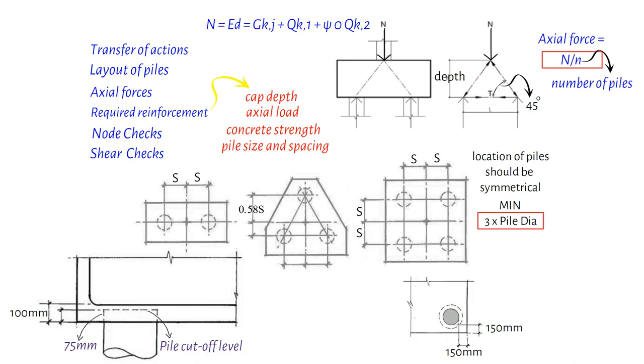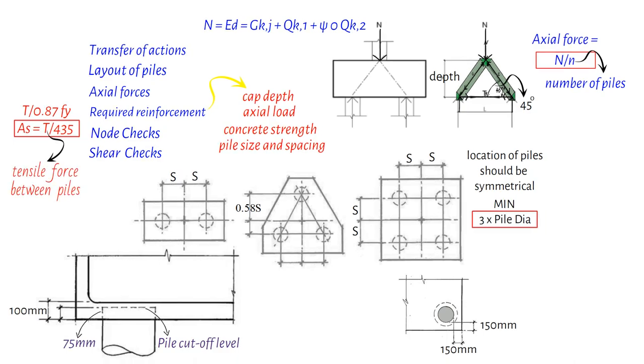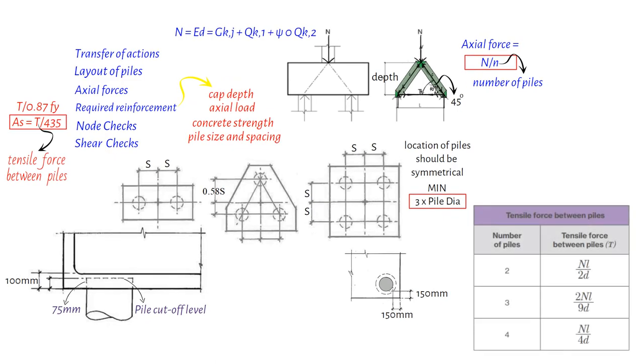In designing pile caps, the strut and tie method is employed, with reinforcement acting like a truss, with concrete handling compression and steel handling tension. The required tension reinforcement is T divided by 0.87 times the tension strength of steel, usually 500 N per square mm. T is the tensile force between piles and can be calculated using the shown table.